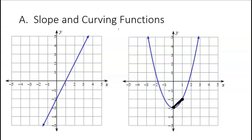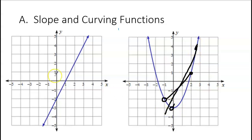An average rate of change is basically the slope between any two points. It tells you how much y changed versus how much x changed over that interval. But depending on what two points you pick, you'll get different answers every time if it's a curving function. With a straight line, it doesn't matter what two points you pick — you'll always get the same answer. With curving functions, you'll get different answers for different points.